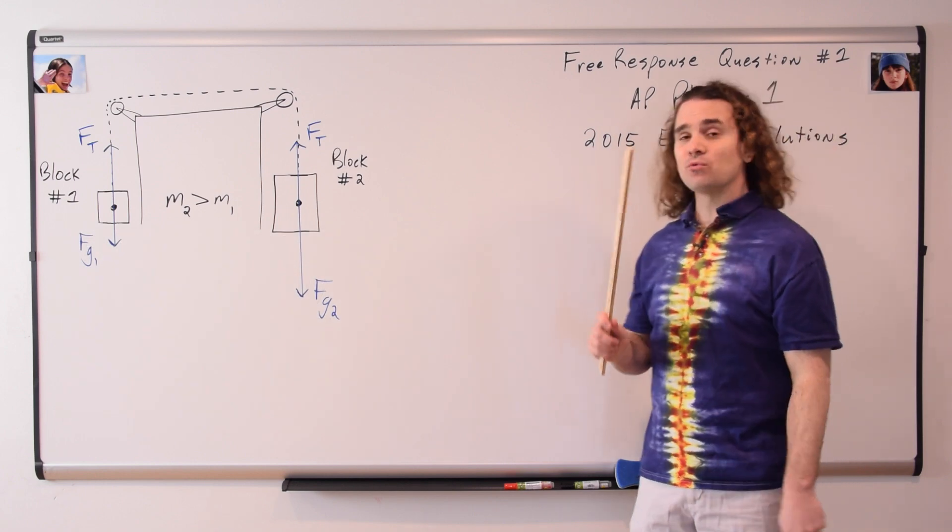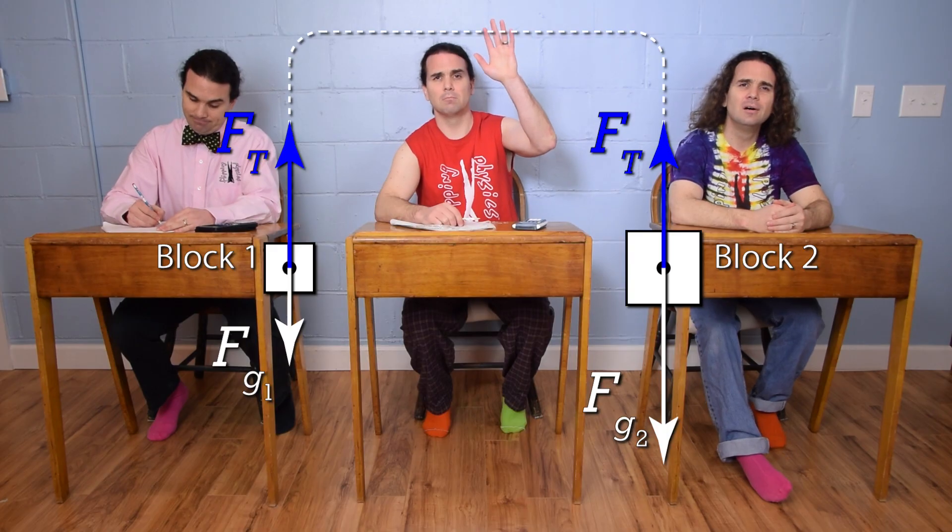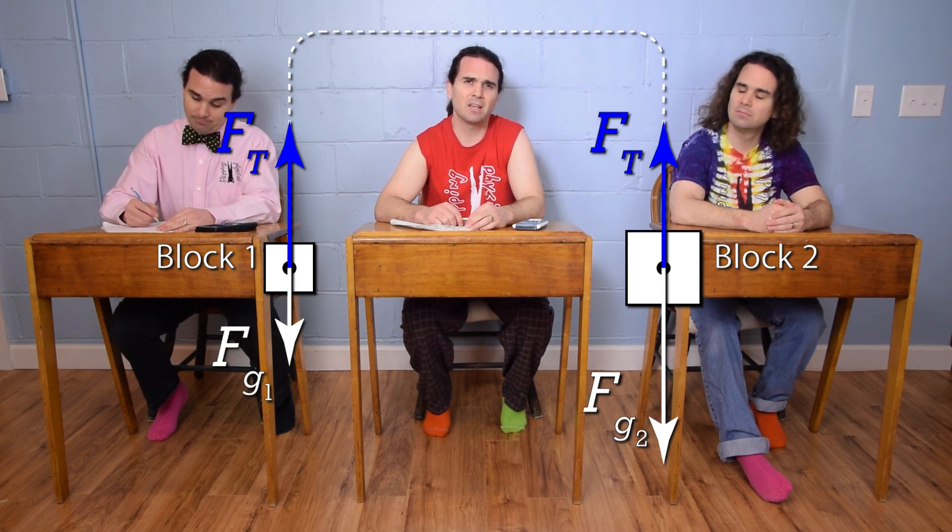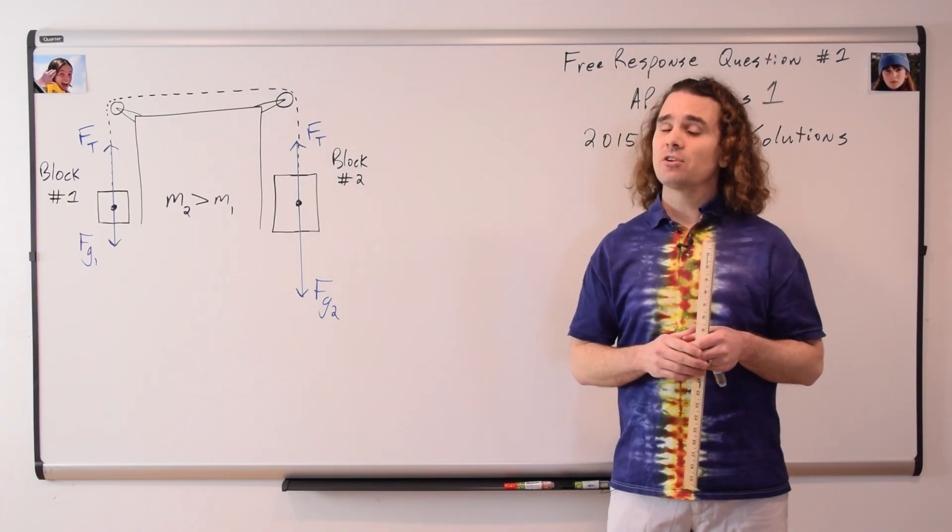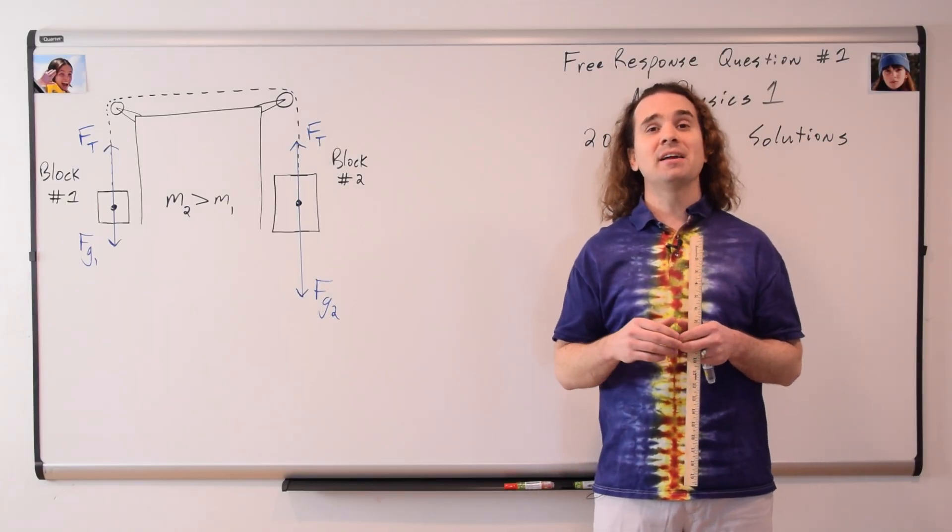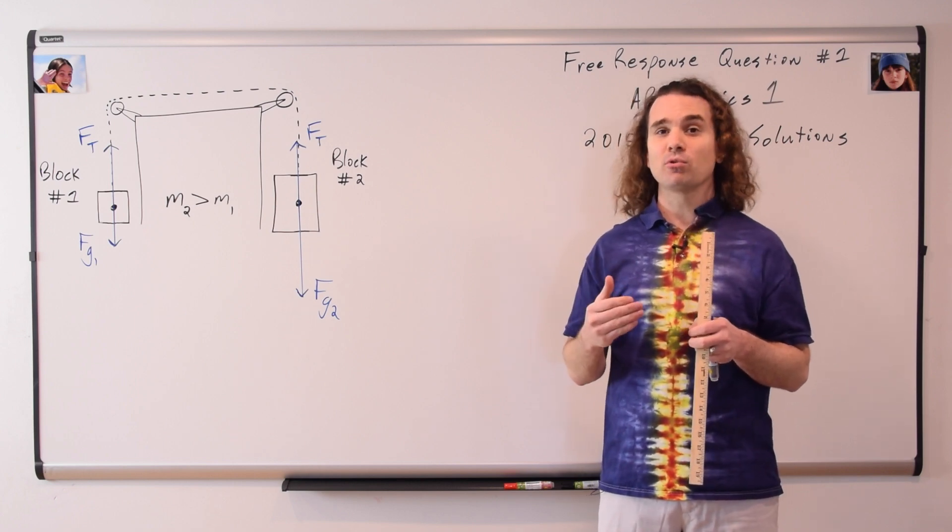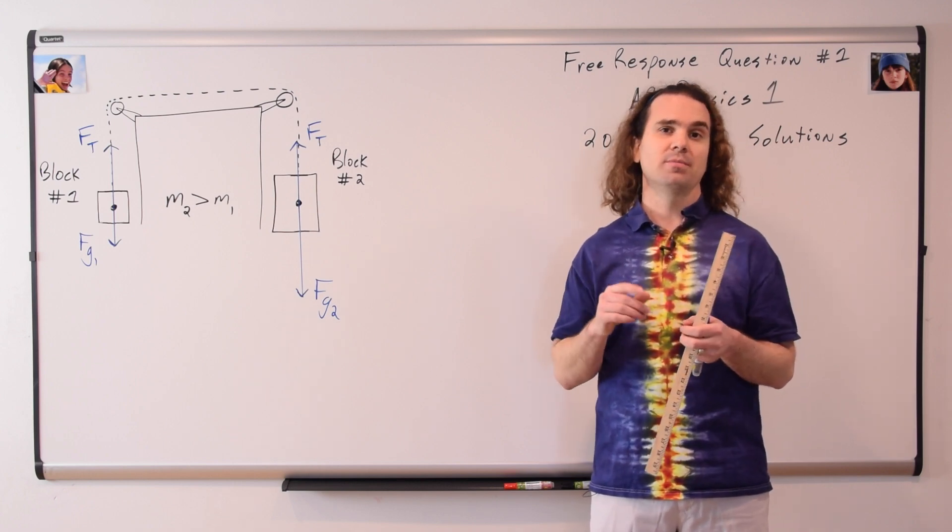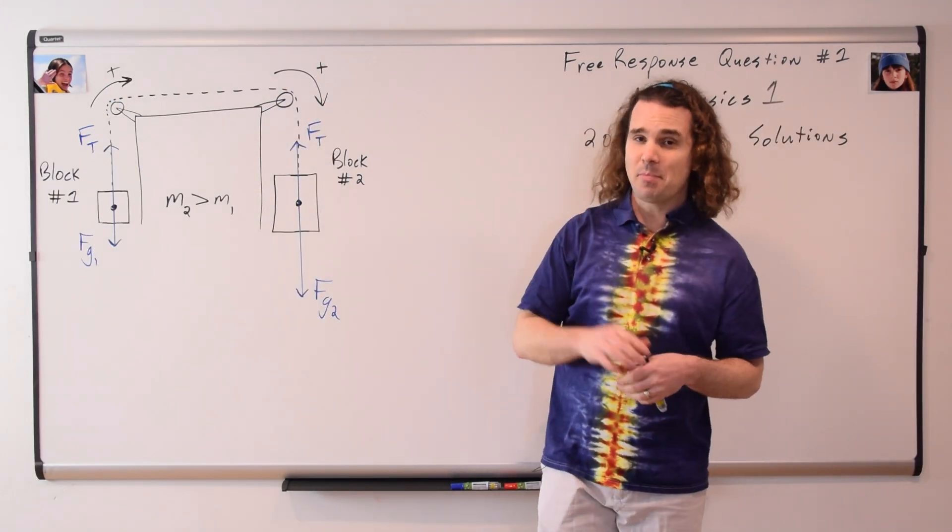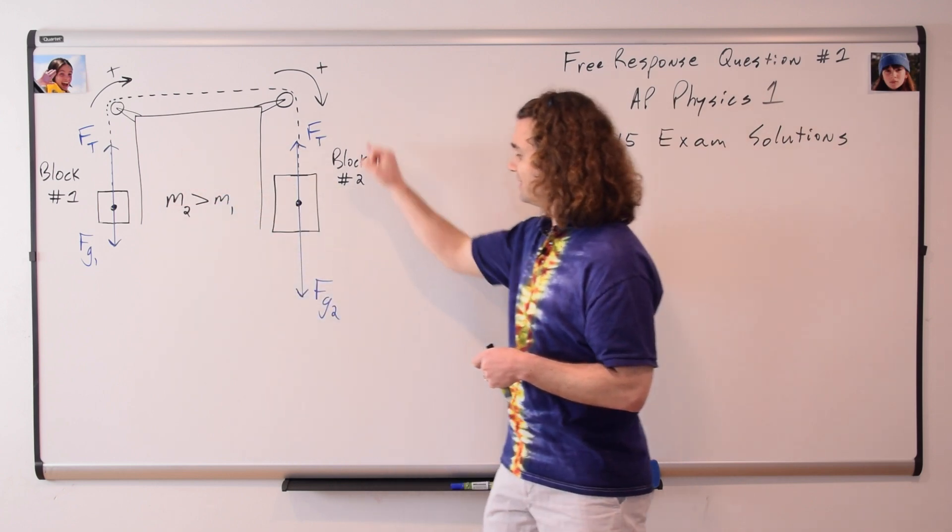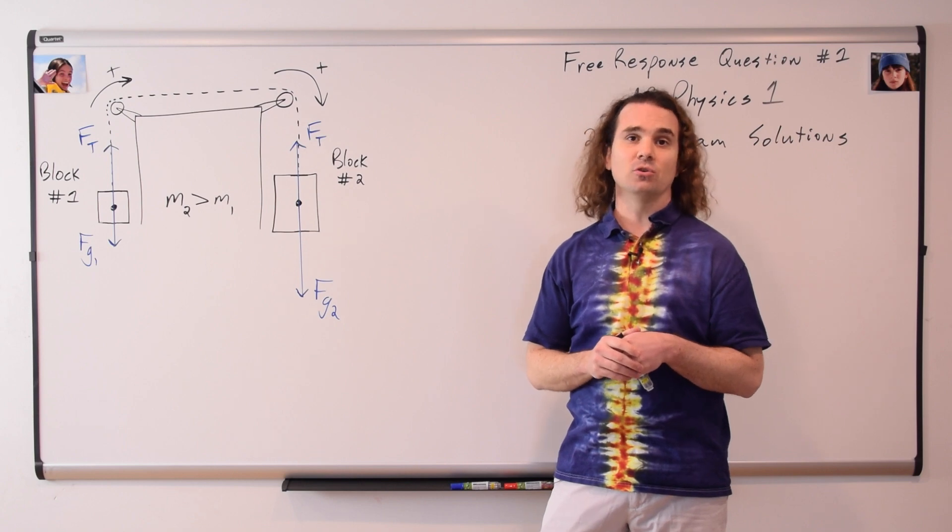Part B asks for us to derive the magnitude of the acceleration of block two. Yes Bobby? Don't both blocks have the same acceleration because they are attached by the string? Bobby, that is correct. That is actually why we are going to find the magnitude of the acceleration of both blocks simultaneously by summing the forces on the whole system. Oh, but first, we need to identify the positive direction, which is going to be up for block one and down for block two, the direction we know both blocks are going to accelerate.